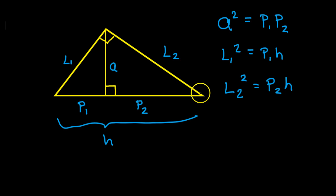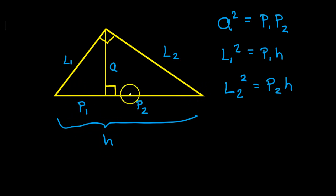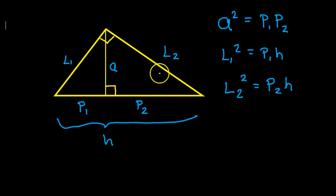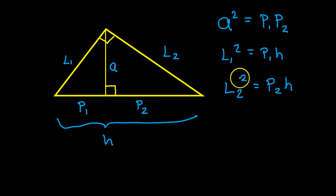Now looking at the hypotenuse of the big triangle, which I called H, these two parts of the hypotenuse we could call part one and part two. Notice how I have part one and leg one on the same side, and part two and leg two on the same side. That's important when you're doing these formulas.